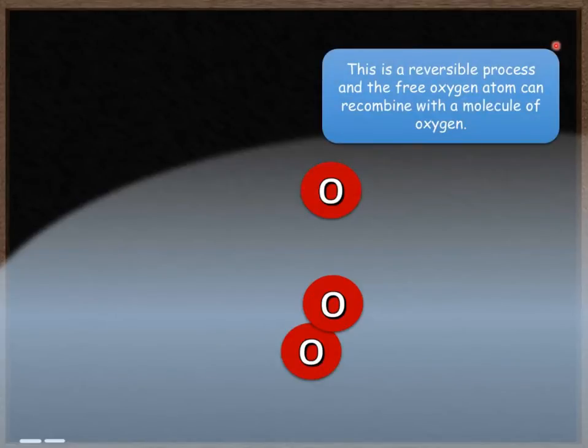And this is a reversible process. So it's absorbed that UV radiation and split into two. It can now recombine this free oxygen atom and the molecule of oxygen, O2, to make ozone again. This is now able to absorb some more ultraviolet radiation and protect the earth even more.